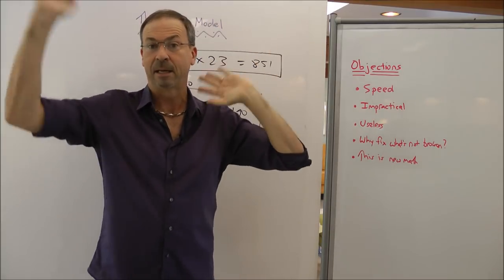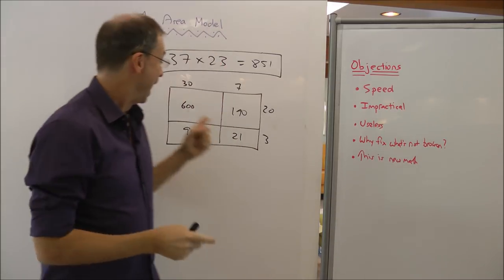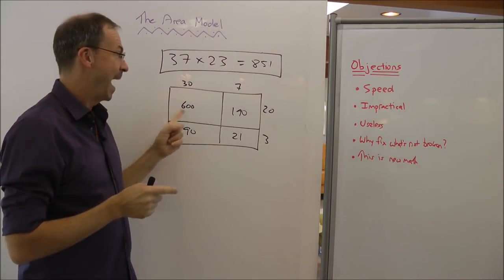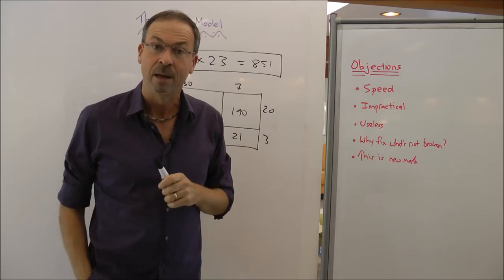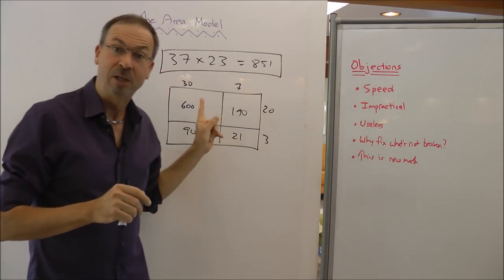I get a 600 piece, I get a 21 piece, I get a 90 piece, I get a 140. I can actually do it in my head. So if speed's the issue, having that imagery in my brain actually helps me get the answer quickly. Speed, I would argue, is not actually the concern here.